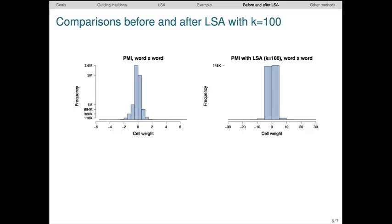Here I've applied LSA to a word-by-word matrix that was first re-weighted with pointwise mutual information. The PMI weighting is given here on the left. PMI makes the distribution of counts in the underlying matrix more normal, which should make SVD more reliable. So here on the left we have the distribution of PMI values, and on the right is the distribution of values after we apply LSA to that PMI matrix.